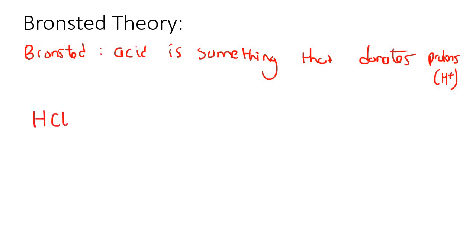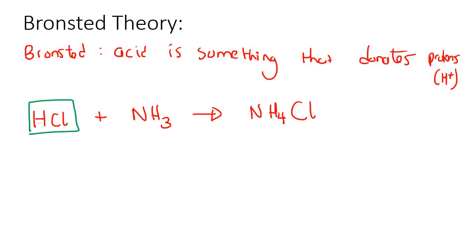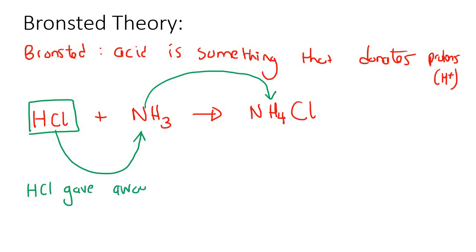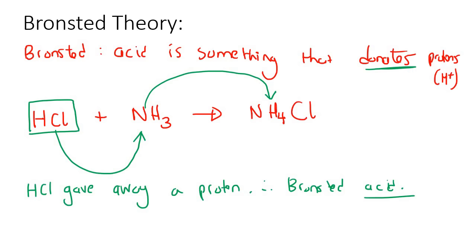For example, if we take HCl and react it with NH3, we produce NH4Cl. Can you see that HCl gave away one of its hydrogens to NH3? That NH3 was now able to have an extra hydrogen and became NH4. So we can say that HCl gave away a proton — therefore it is a Bronsted acid, because it donated a proton.